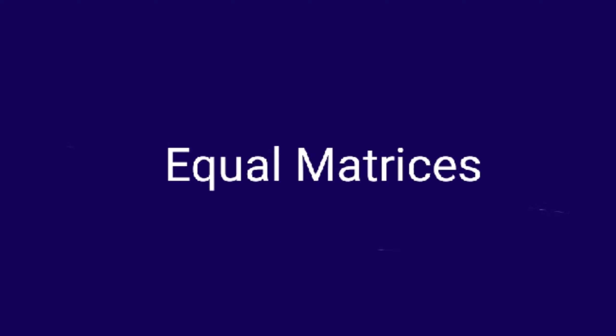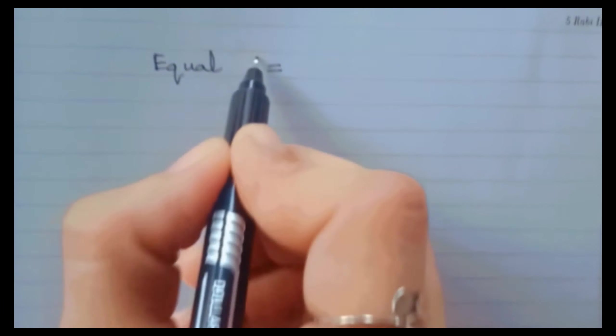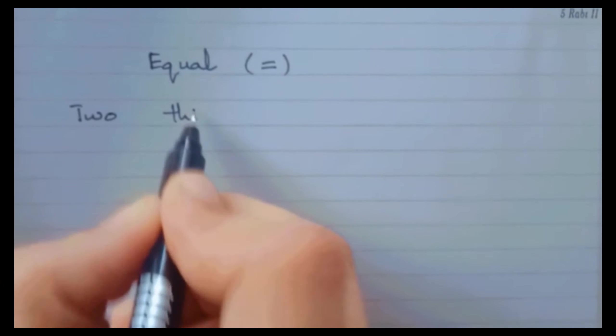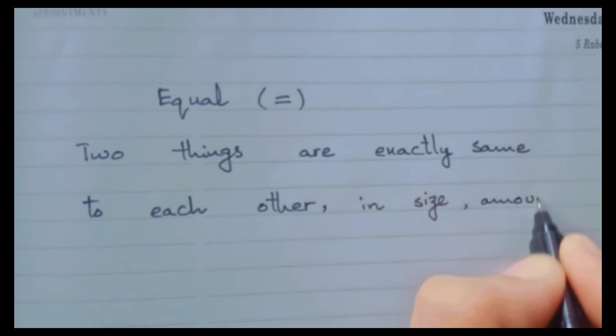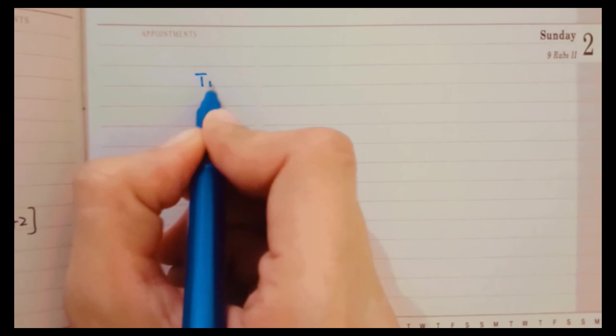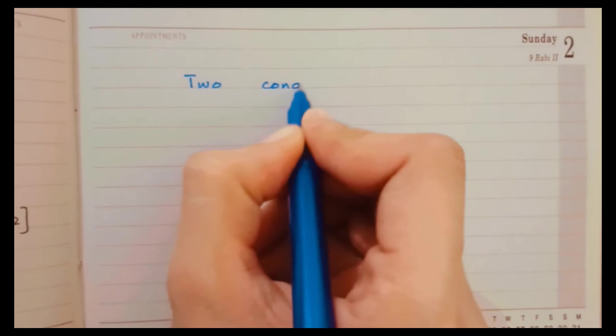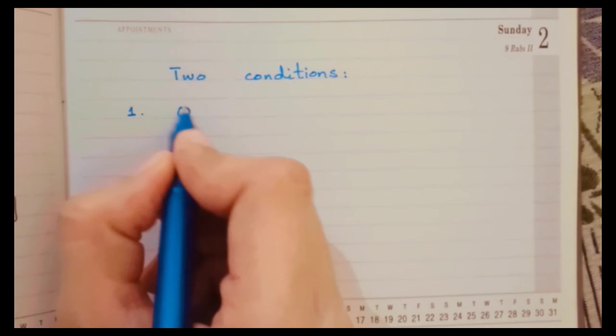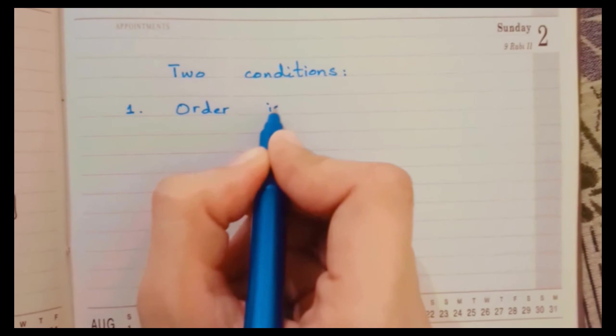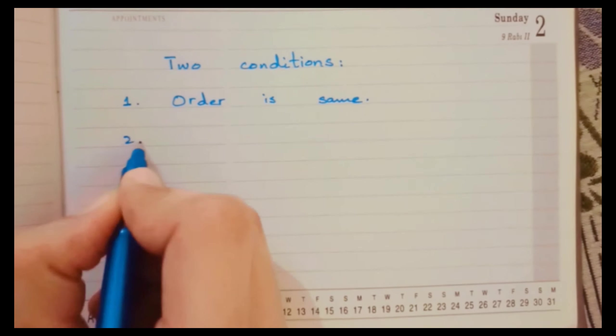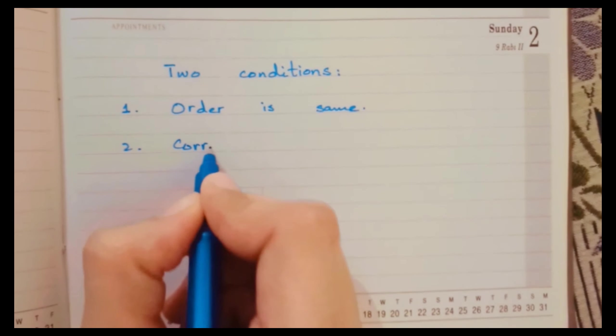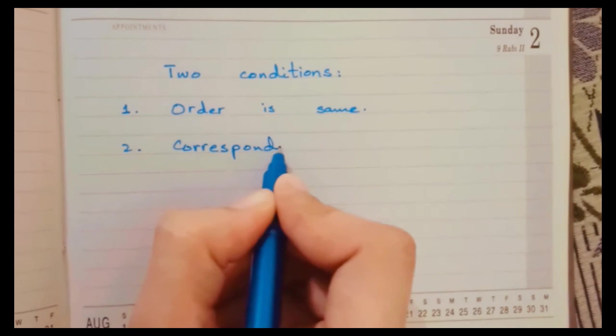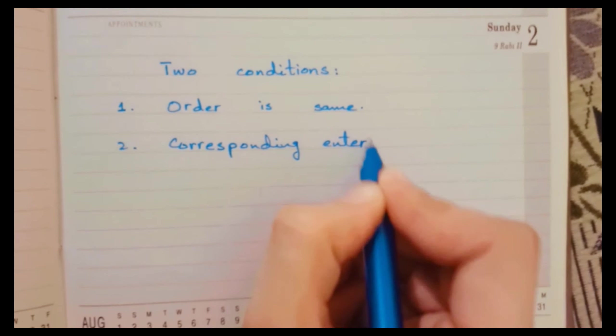Now there comes the equal matrices. For equal matrices, we must know what is the meaning of equal. You know better that two things are exactly same to each other in size, amount, or number, then those two things are called equal. So same is the case with the matrices. There are two conditions to check if two matrices are equal or not. The first one condition is the order is same or not. The second one is the corresponding entries or the elements are same in these two matrices. If these two conditions are true for these two matrices, then it means two matrices are equal.